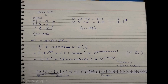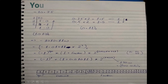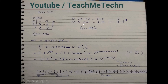Now for the fractional part, 0.75, we use the multiply-by-2 method. We write the fractional part and multiply by 2: 0.75 × 2 = 1.5. We write the non-fractional part (1) on the left and keep the fractional part (0.5) for the next iteration. Then 0.5 × 2 = 1.0, so the non-fractional part is 1.